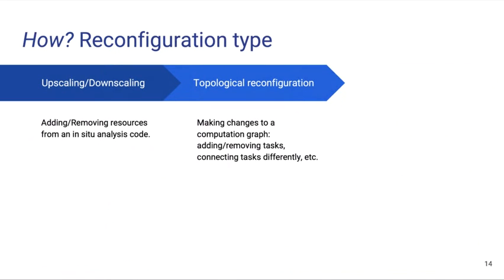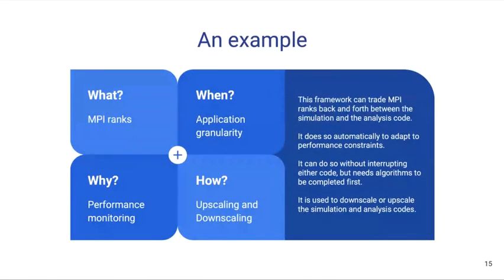Finally, we can consider different reconfiguration types. The most obvious are upscaling and downscaling — adding and removing resources from an in-situ analysis code. Or we can have topological reconfiguration, which comes into play with workflows: you may want to change the computation graph, add and remove tasks, or connect them differently. All four dimensions of elasticity — what, why, when, and how — can lead to a taxonomy for categorizing what a system can do. For example, a framework that trades MPI ranks back and forth between simulation and analysis automatically to adapt to performance constraints, without interrupting either code but requiring algorithms to complete first, would be categorized by MPI rank granularity, performance-triggered, application-level time granularity, used for upscaling and downscaling.